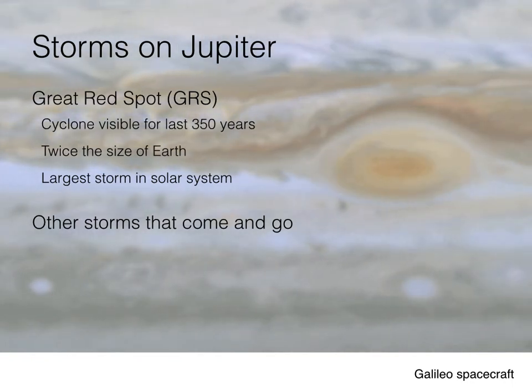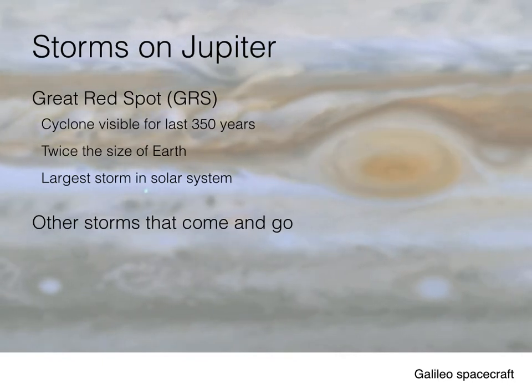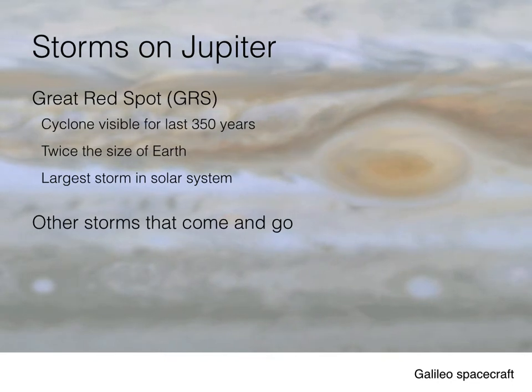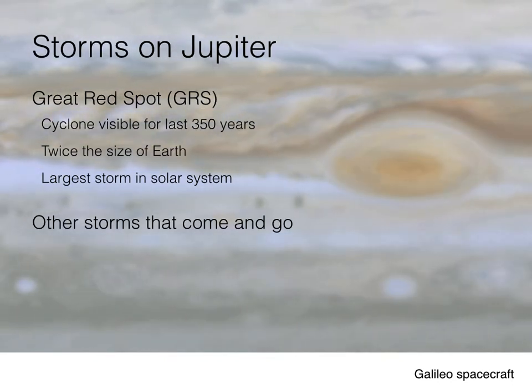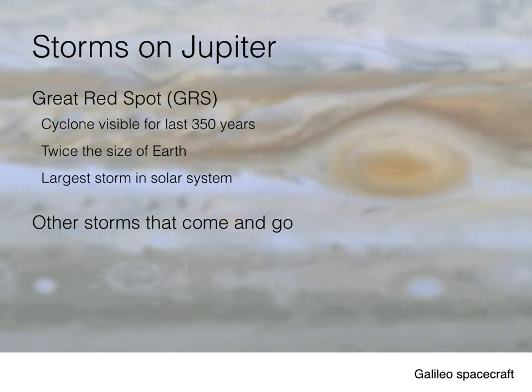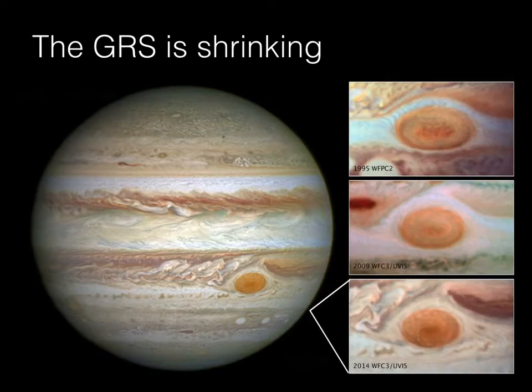The Great Red Spot, however, has endured for about 350 years. Some astronomers think the spot may have been around for 500 years. So it's a massive cyclone. But one of the things that's interesting is that for its enormous size and its aptly named title, the Great Red Spot, it's not as great as it used to be — as a matter of fact, it's been shrinking. These are some Hubble Space Telescope images of Jupiter.